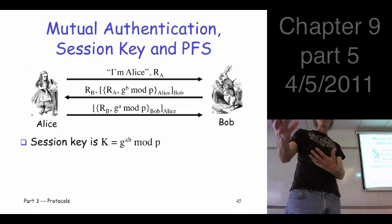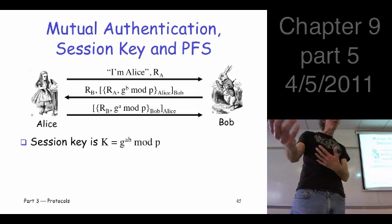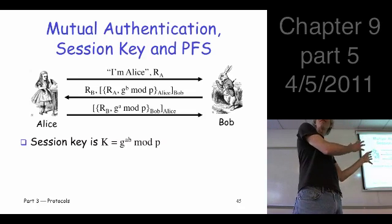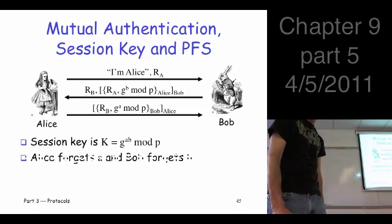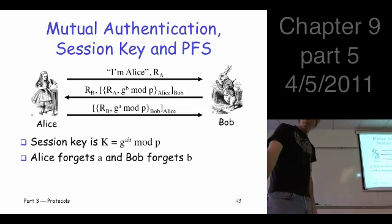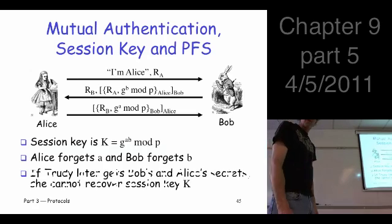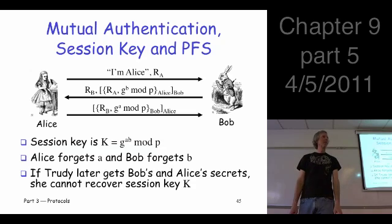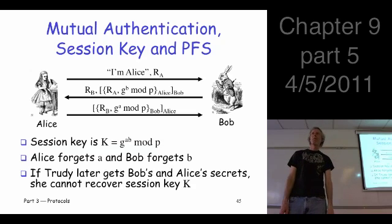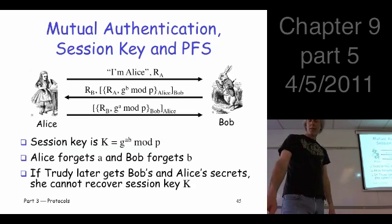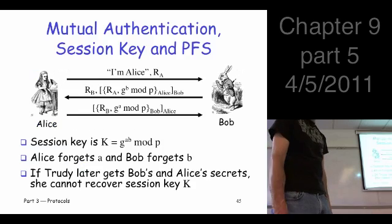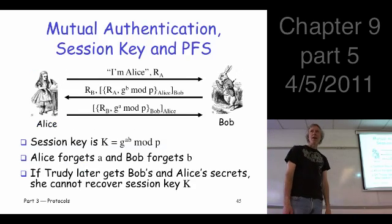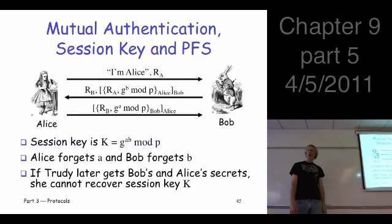Perfect forward secrecy is a really nice property, and the best part is it's really easy to get — you don't have to work very hard to achieve it.